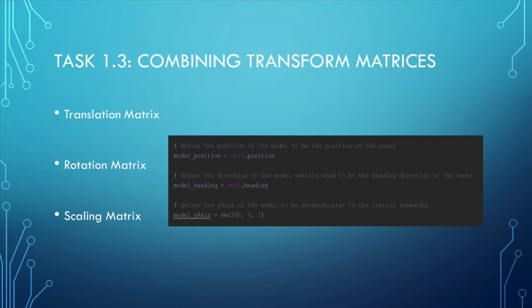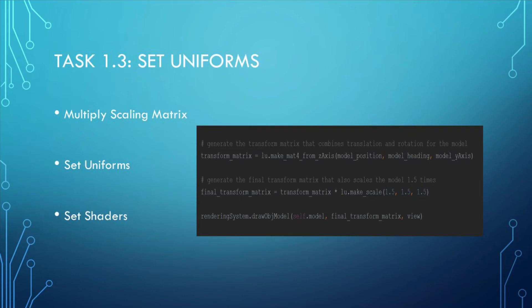In addition, we need to define the y-axis of the model to be perpendicular to the terrain, which means the y-axis of the model will be pointing upwards instead of forwards. With the three variables above, we can generate a transform matrix that properly sets the position and the heading of the racer using linalg.makeLookAt from z-axis. Lastly, we could multiply this transform matrix with a scaling matrix so that the model could be scaled by 1.5 times along the x, y, and z axis. Also, we need to set the common uniforms and shader for the model.